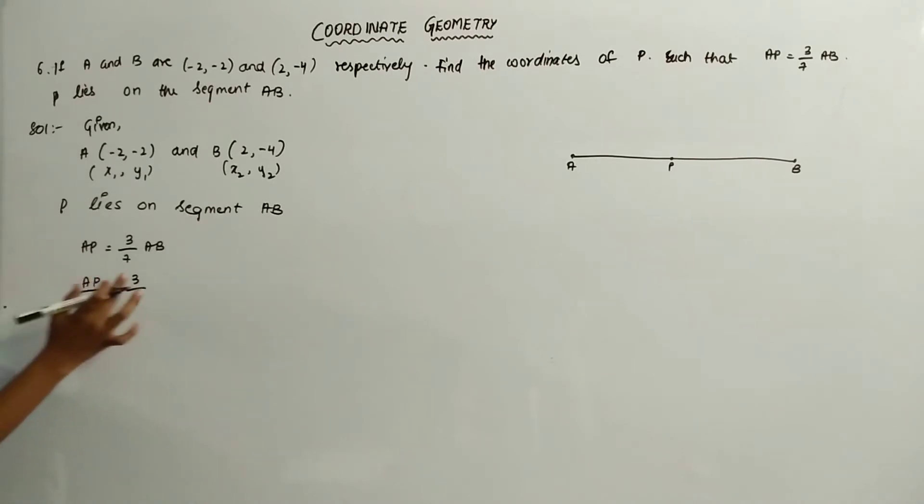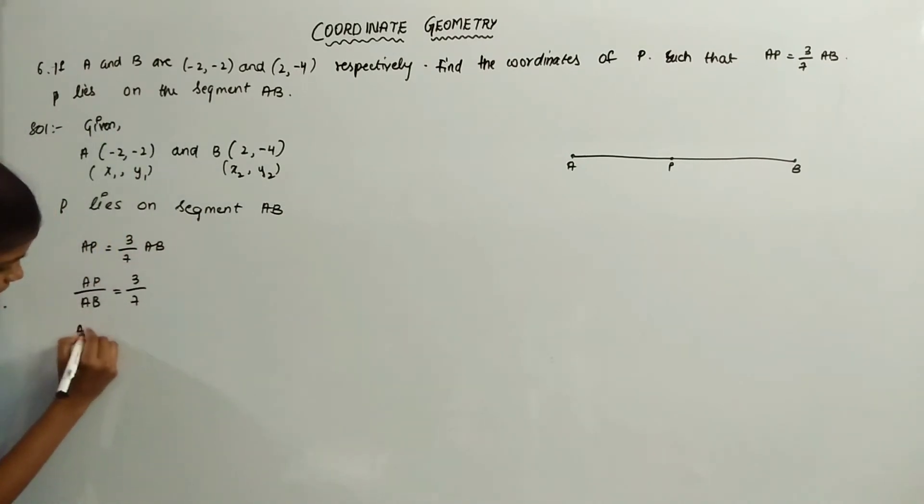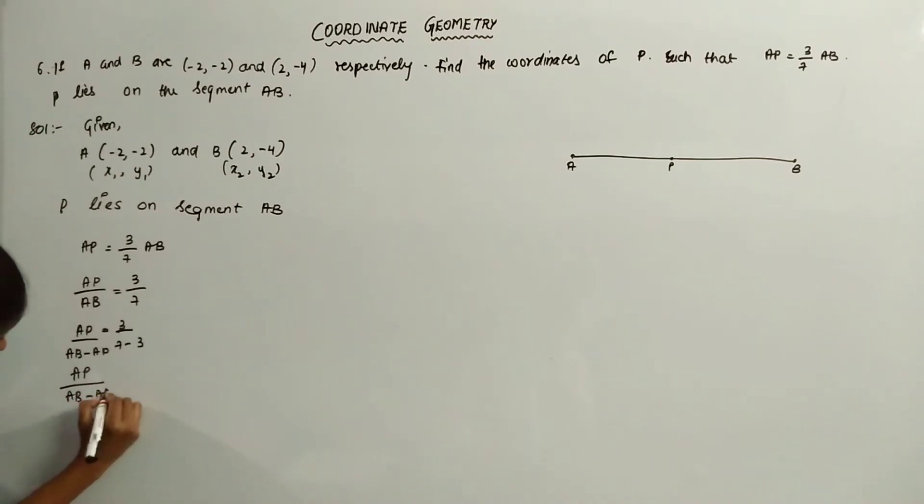We got the value of AP, that is 3, and AB, that is 7. To find the value of PB, it has to be written: AB minus AP is equal to 7 minus 3. PB is equal to 4. So the value of PB is 4.